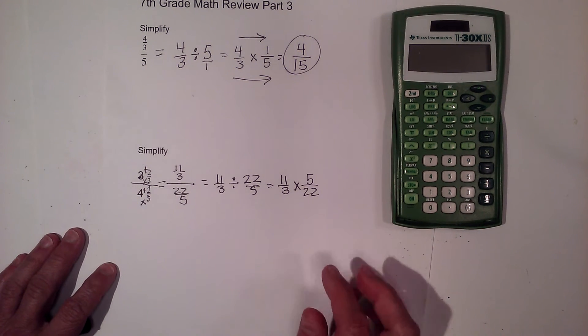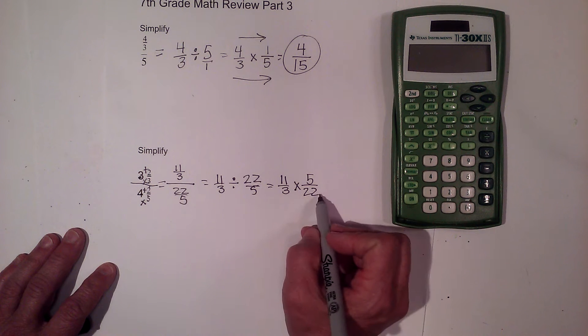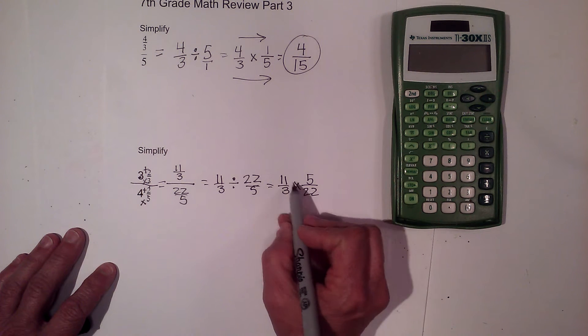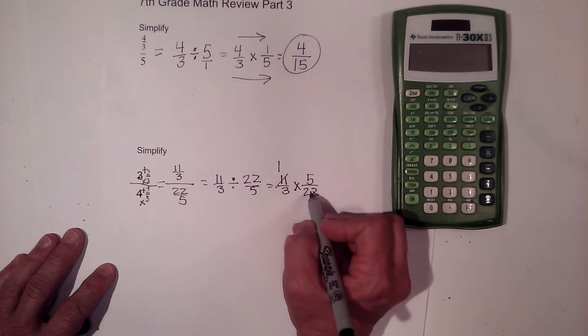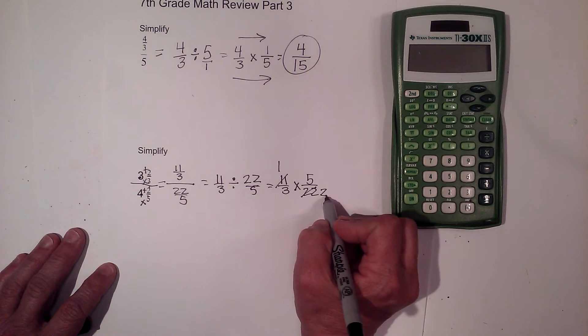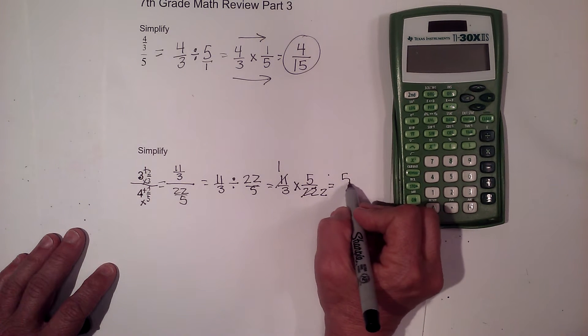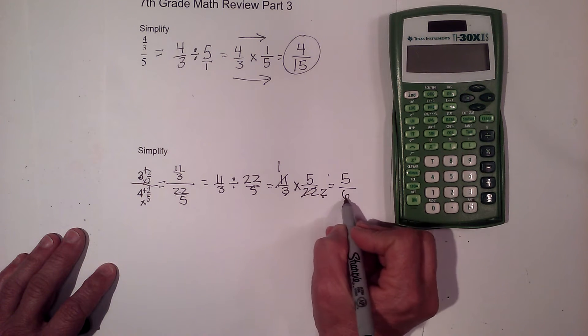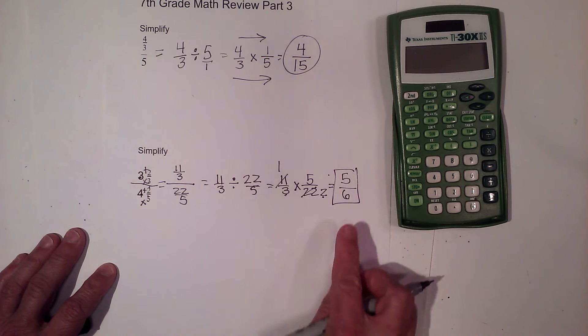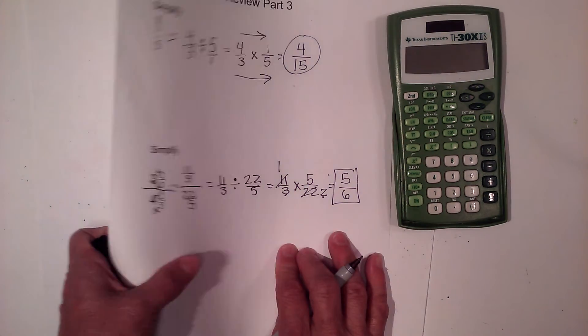Now I can multiply across. So I could multiply this and get 55 over 66, but I can also reduce these two. So eleven goes into itself once, and eleven goes into 22 twice. So I now can multiply the top. 1 times 5 is 5, and 3 times 2 is 6. So it ends up being 5 sixths. So that's how you handle those mixed number fractions.